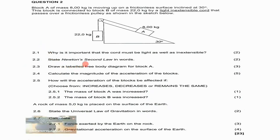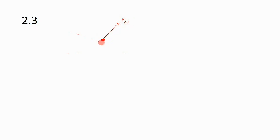Question 2.3 says draw a labelled free body diagram for Block A. The forces acting on it are tension, the normal force acting perpendicular to the surface, and then fg perpendicular and fg parallel — the resolved components of weight. We faintly draw the incline, indicate the normal force perpendicular to the surface, and then fg perpendicular below.